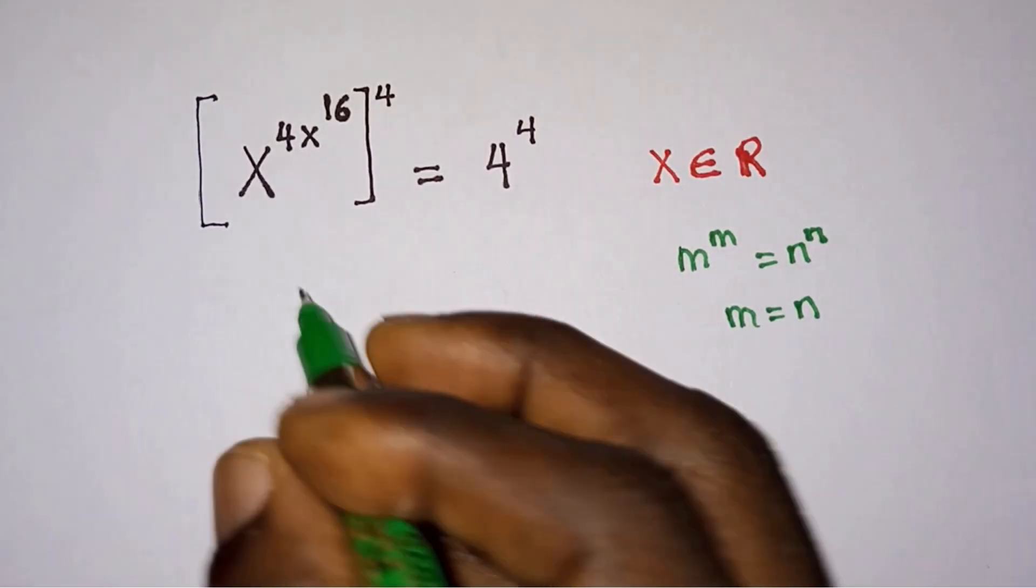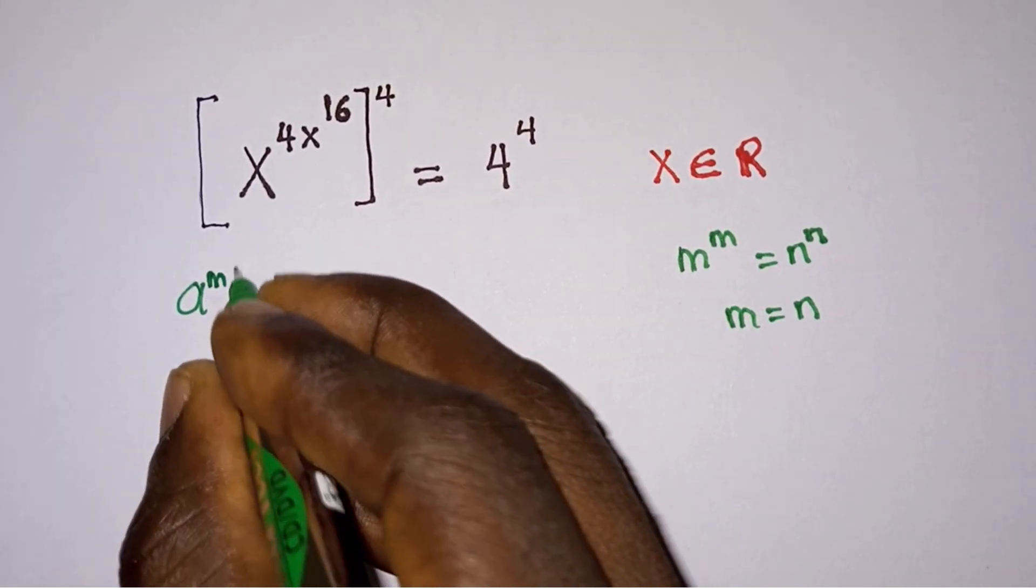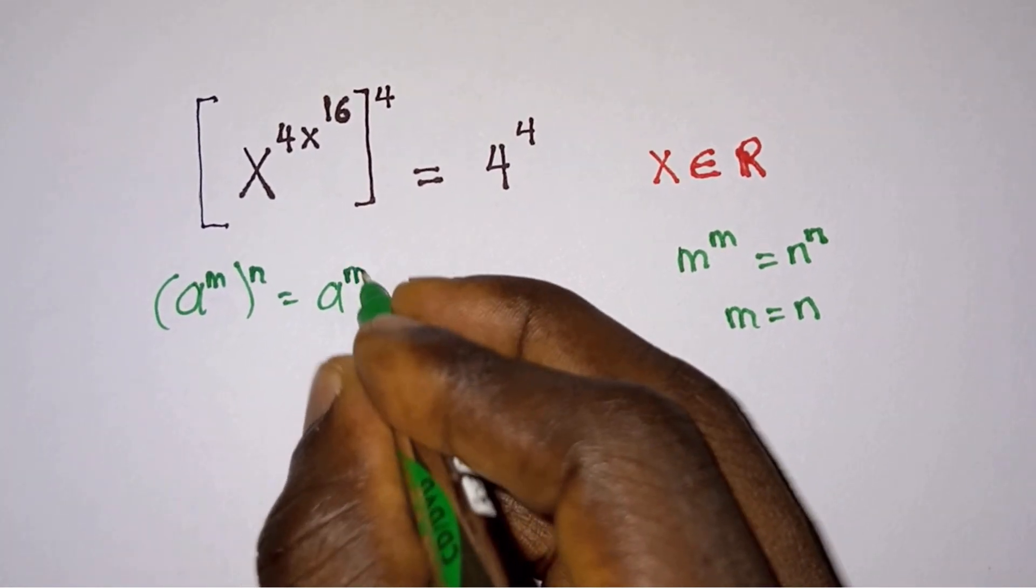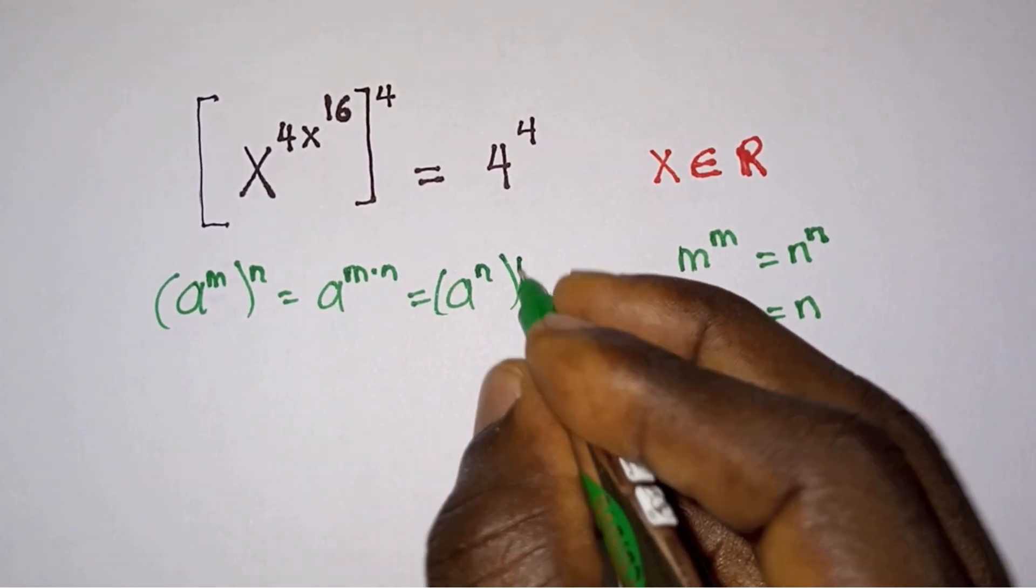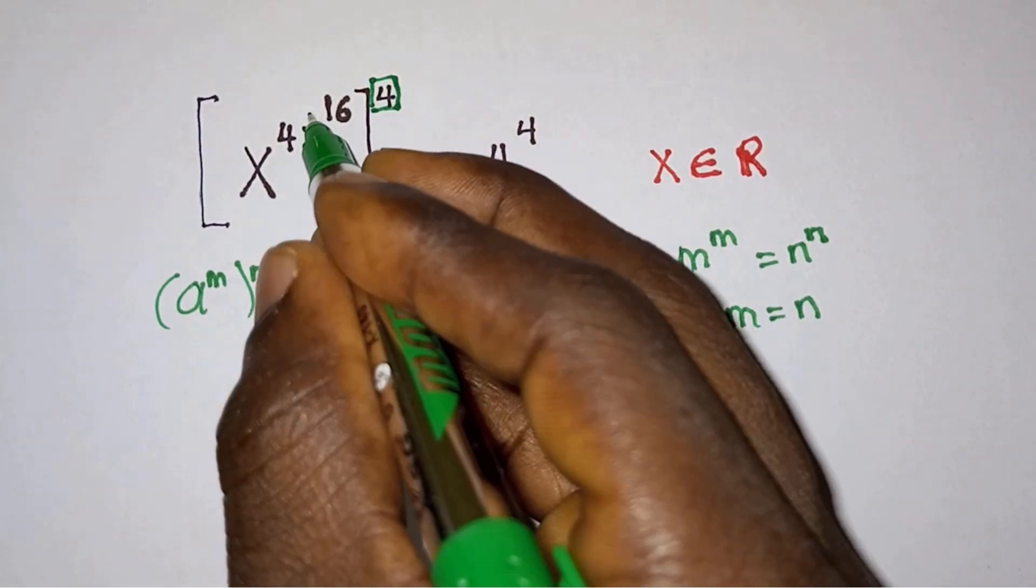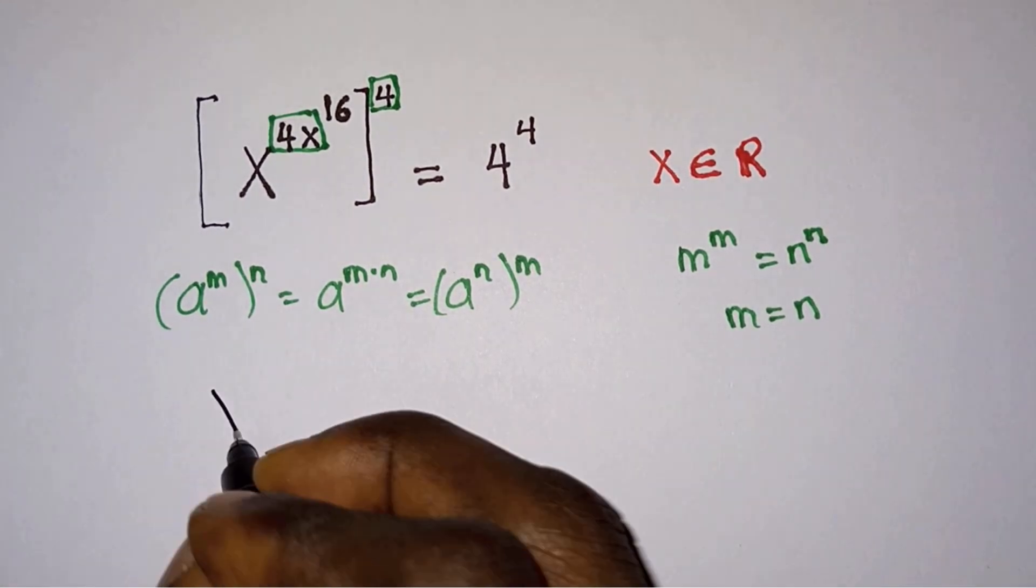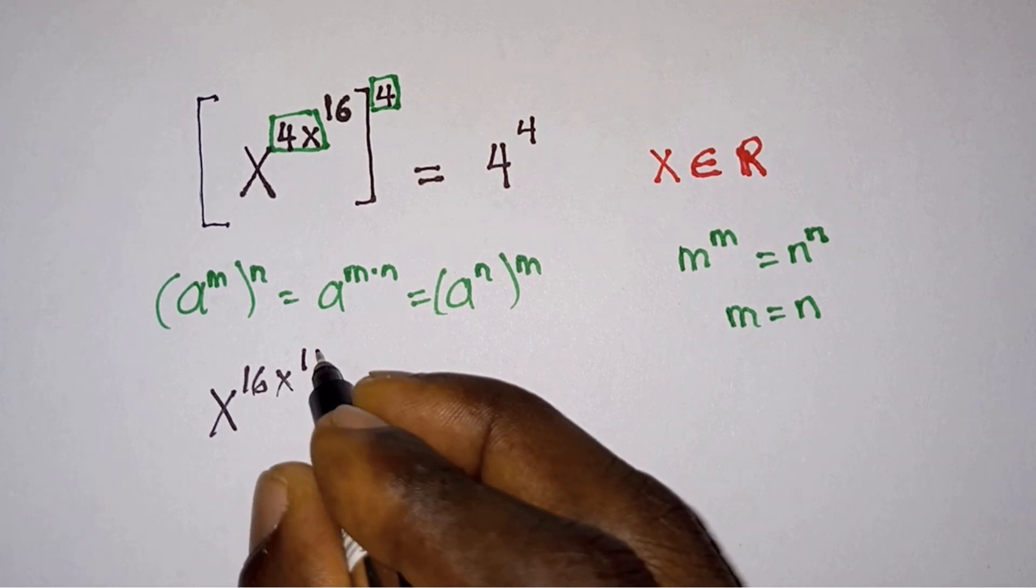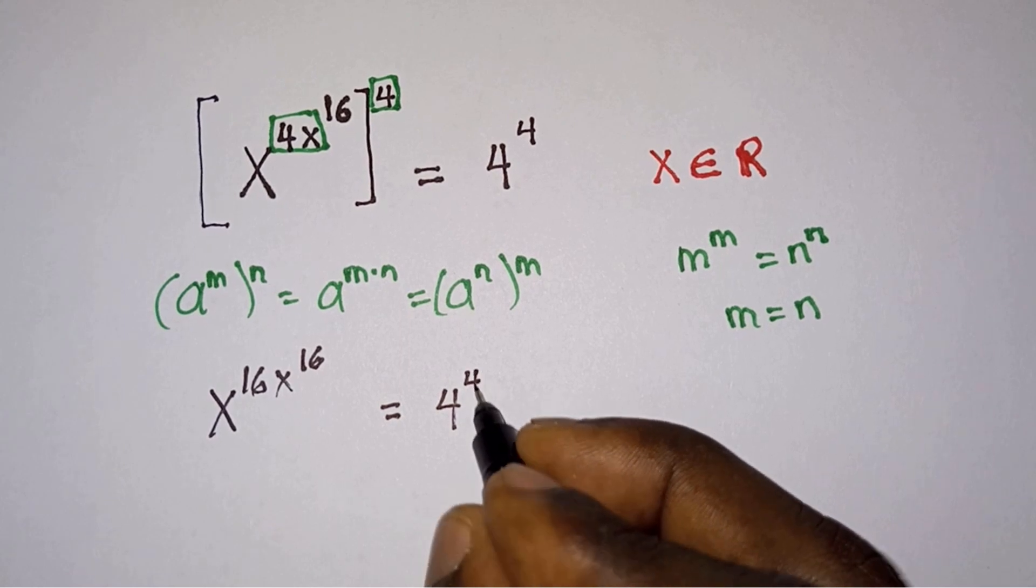So from here, we will just apply a power rule which states that a to the power m or to the power n is equal to a to the power m times n, and it is also the same as a to the power n or to the power m. So straight away, we can multiply this 4 over here by 4 times x. So we would have x to the power 16x to the power 16 is equal to, let's keep the right hand side, 4 to the power 4.